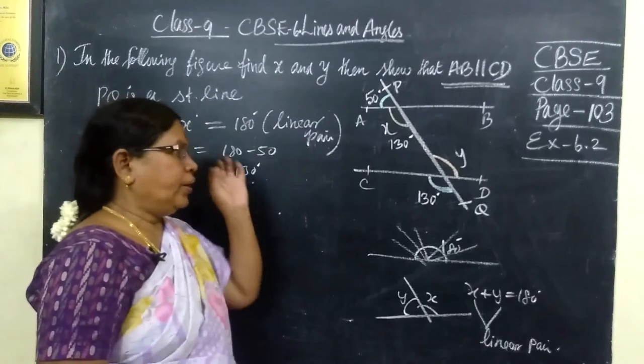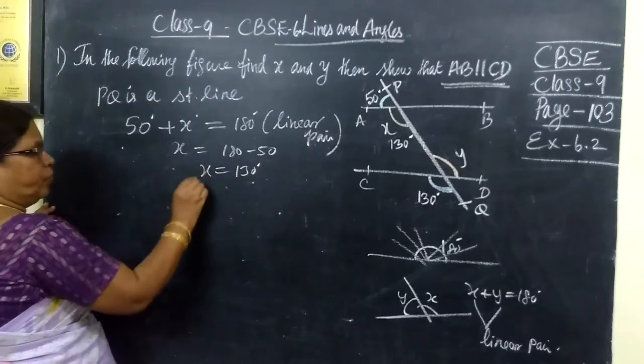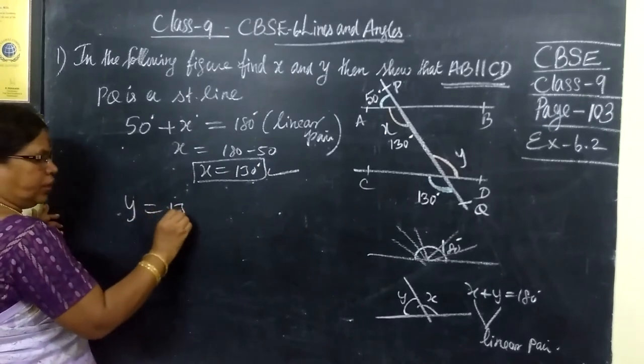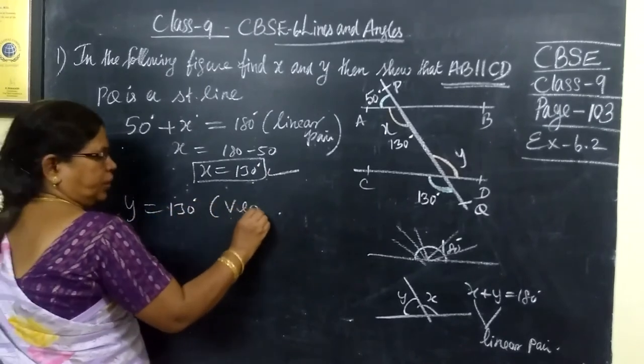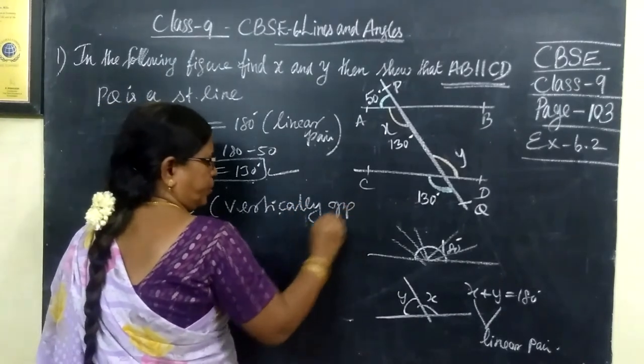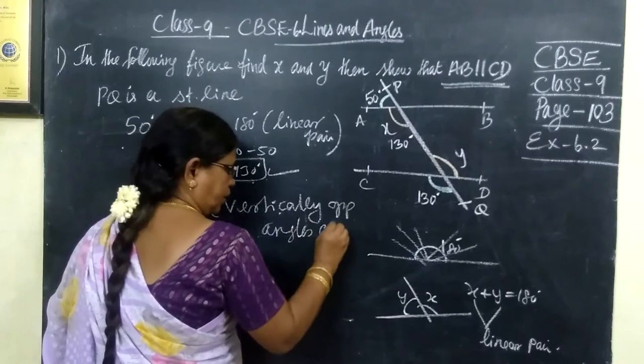Now we want to find Y. So X over. Now Y equal to 130 degree because vertically opposite angles are equal.